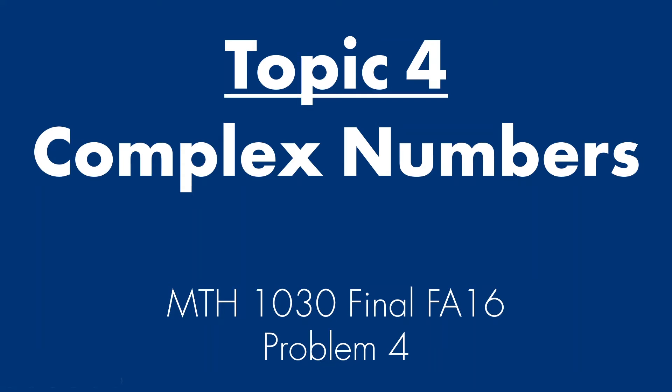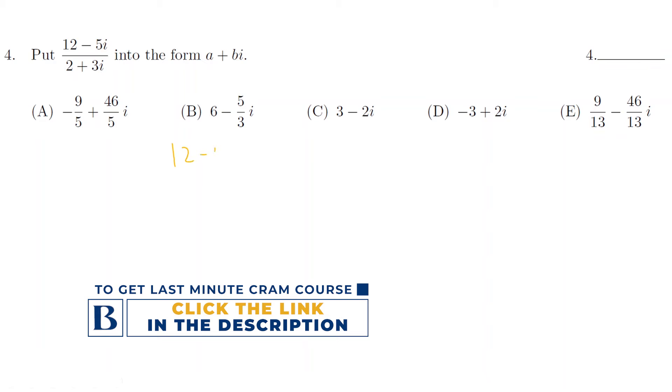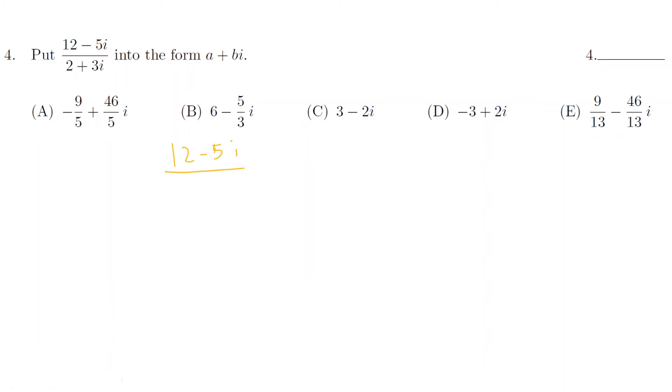We're going to consider problem 4 from final FA16. So here we need to do the same exact thing as we just done in the previous problem. We need to rationalize the bottom. So 12 minus 5i over 2 plus 3i. What is the conjugate for the bottom? It is 2 minus 3i, 2 minus 3i. If I foil the top, I got to get 24 minus 36i minus 10i plus 15i squared. My bottom is going to be equal to 2 squared minus 3i squared. Difference of squares.